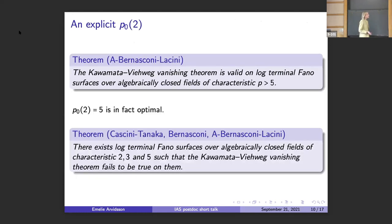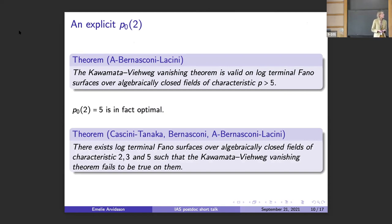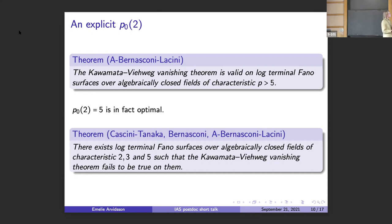For my thesis, I was interested in finding an explicit p0 in dimension two. Together with Fabio Bernasconi and Justin Lacini, we managed to do this. We showed that the Kawamata-Viehweg vanishing theorem is true on log-terminal Fano surfaces over algebraically closed fields of characteristic greater than five. We also showed that five is in fact optimal, because we constructed a Fano surface for which this fails in characteristic five. Together with counterexamples in characteristic two and three, this gives that the bound is optimal.